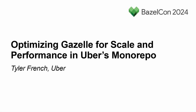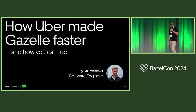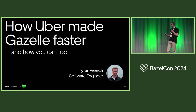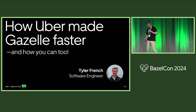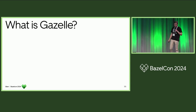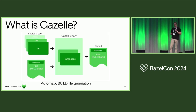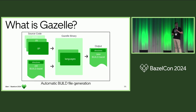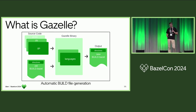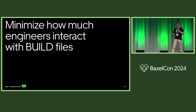I am Tyler. I'm on the back-end developer experience team at Uber, which currently is Go and Java. Today I'm going to talk about how we made Gazelle faster and how you can too. Gazelle is a very extensible and configurable automatic build file generator. We can create rules that tell it how to create build file generation, and we can use this to minimize how much engineers interact with build files.